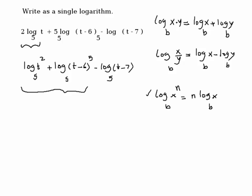These two would be using property number 1. If I have log of x plus log of y, I can change it in terms of the product. Your x is t squared. Your y is t minus 6 to the power of 5.